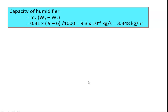The capacity of the humidifier — the amount of water vapor added — is: M × (W3 − W2) = 0.31 × (9 − 6) / 1000 = 9.3 × 10⁻⁴ kg/s, or 3.348 kg/hour.